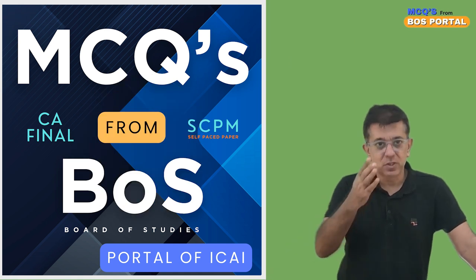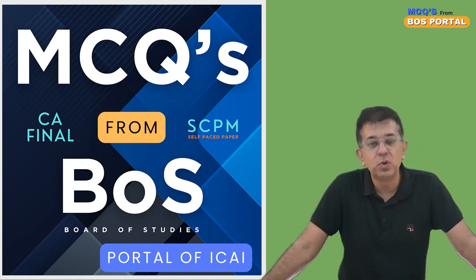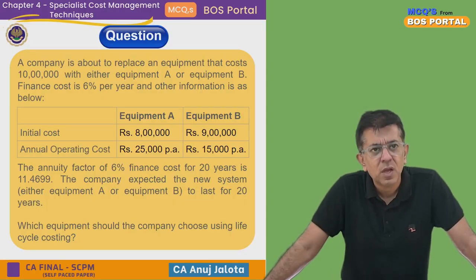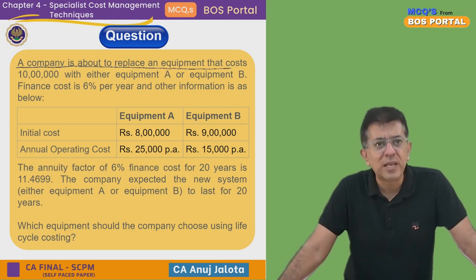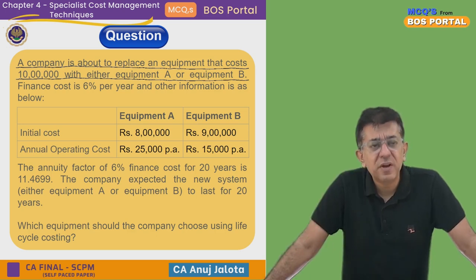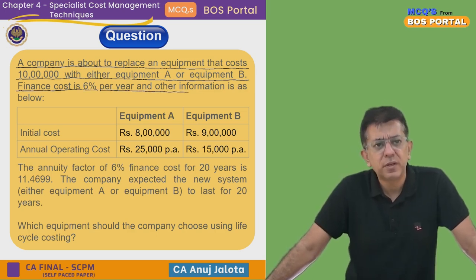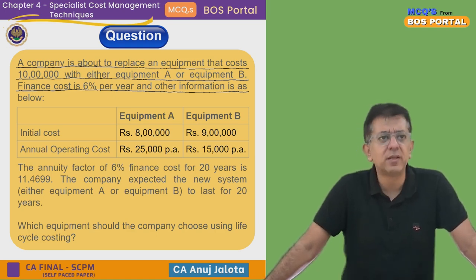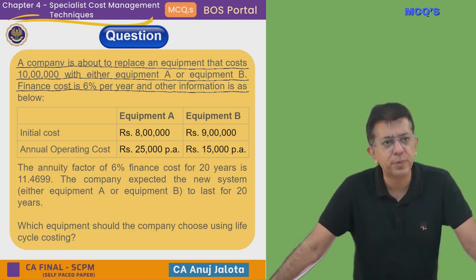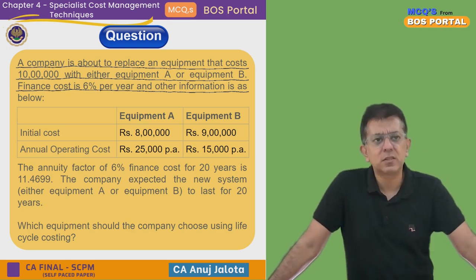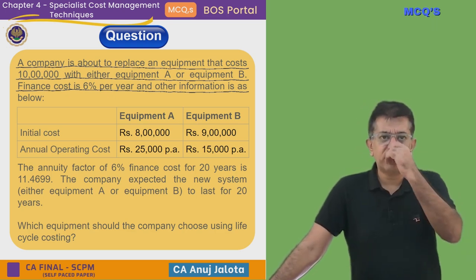We are on a mission to do every possible MCQ. Chapter number four is our mission today. The question is: a company is about to replace equipment that cost ten lakh rupees with either Equipment A or Equipment B. Finance cost is six percent per year — finance cost would be thought of as your cost of capital. Equipment A has an initial cost of eight lakhs and annual operating cost of 25,000 per annum. Equipment B has an initial cost of nine lakhs and annual operating cost of 15,000 rupees per annum.